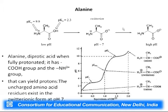Around pH 7 we come to a point where the carboxyl group has given away its proton and the net charge is 0. This is the zwitterionic state, which corresponds to the pI, or isoelectric point (isoelectric pH). We will see in detail what the isoelectric pH is.